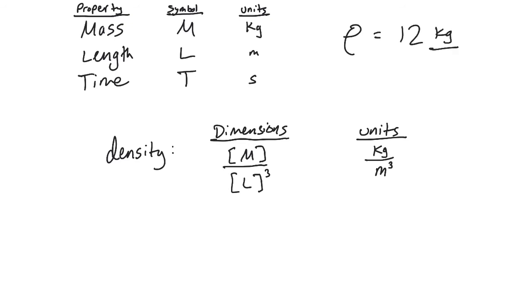Kilograms per meter cubed. Here's a specific example of density. By the way, this is the symbol for density in physics. Typically, it's the Greek letter rho.